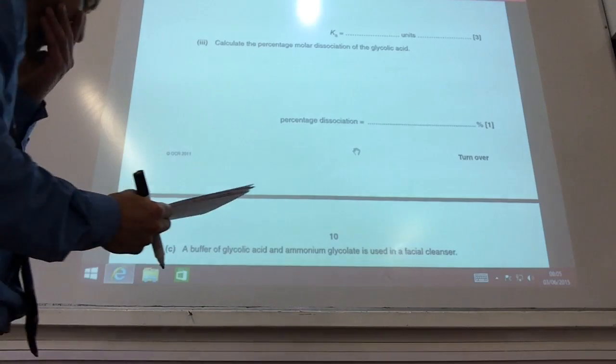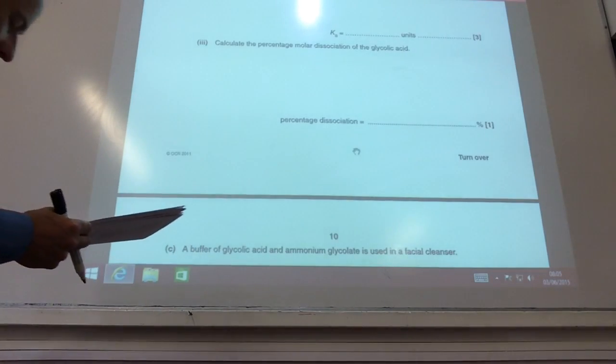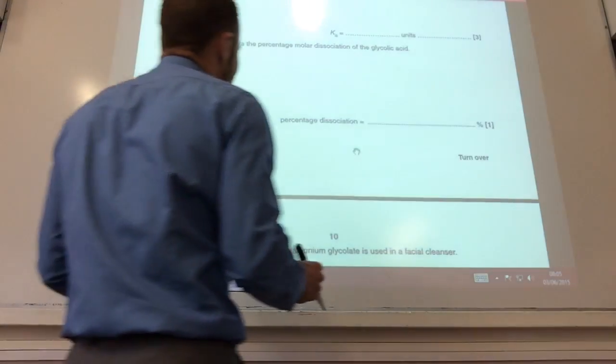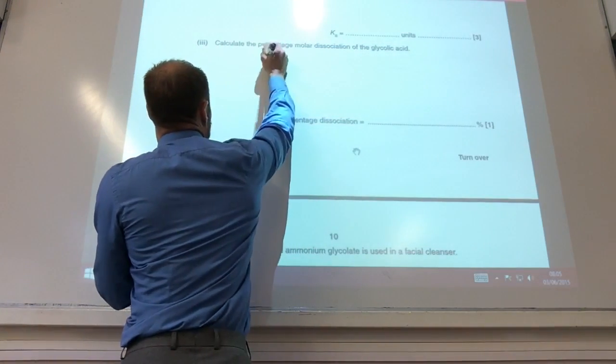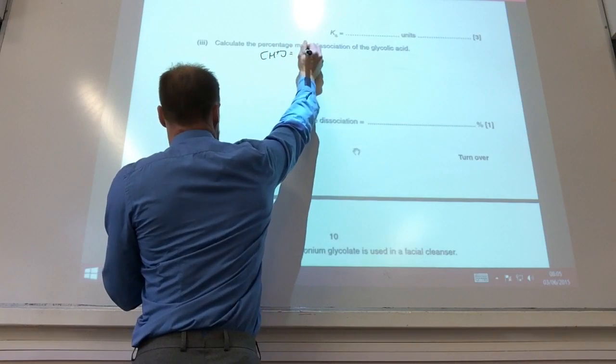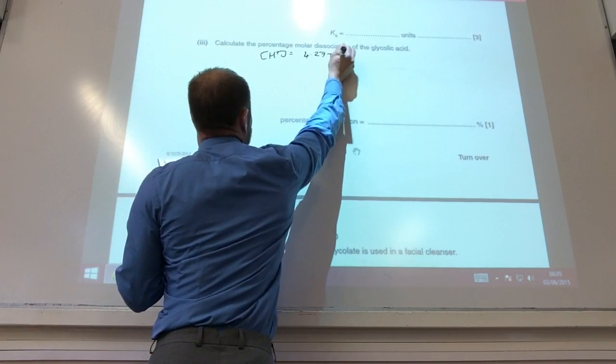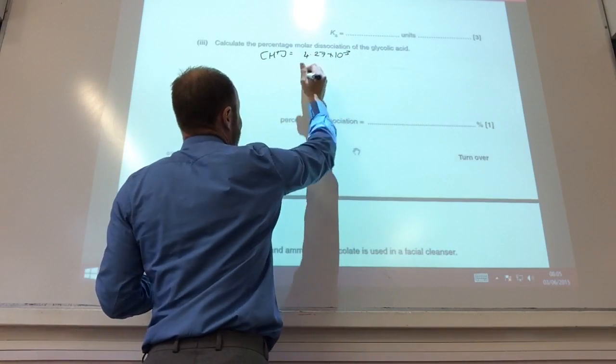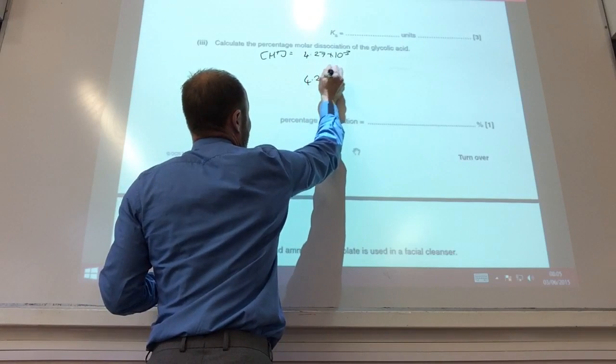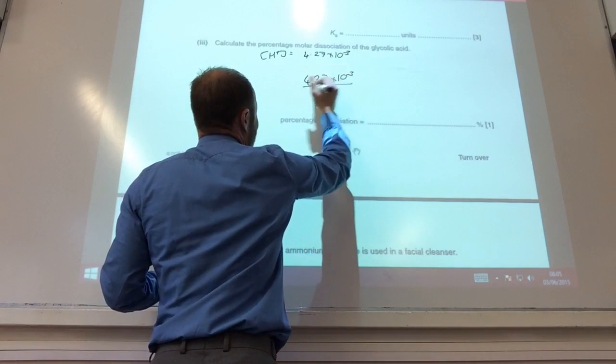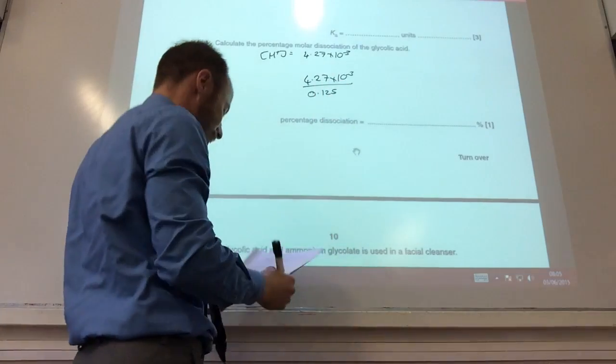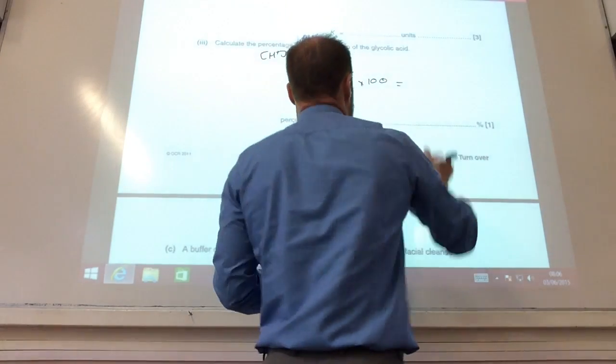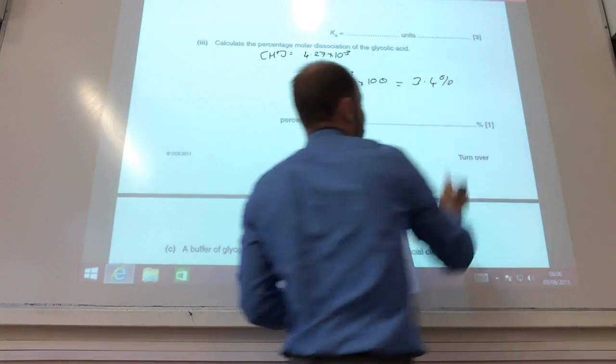So we now need to calculate the molar dissociation of glycolic acid. This is quite an interesting one. How much of it has dissociated? Well, we just worked out up the top that my concentration of H+ is 4.27 times 10 to the minus 3. So that's the amount, the number of molecules have dissociated. So it's going to be 4.27 times 10 to the minus 3 divided by the original concentration, which is 0.125 times 100. And if you do that, you get 3.4%.